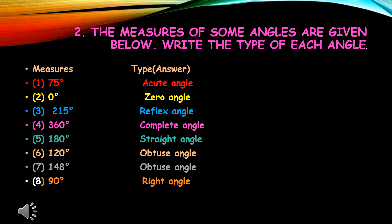And the last one: 90 degrees. We have already learnt the definition — an angle with measure 90 degrees is called a right angle.